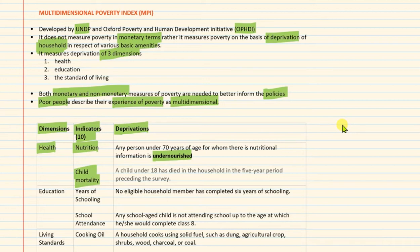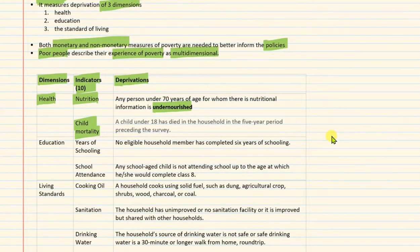MPI examines households. For example, for child mortality, the surveyor will go to the household and ask: whether a child under 18 years of age has died in the household in the past 5 years. On the basis of this, the indicator of child mortality will be decided for that household.